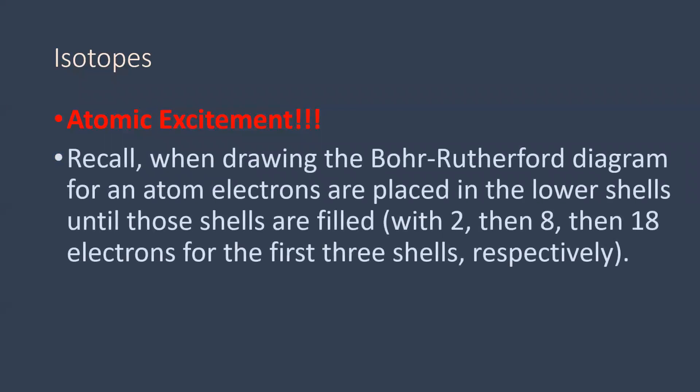Atomic excitement can be part of the reason for this. When we are drawing our Bohr diagram with the electron shells, electrons are placed in the lower shells until those shells get filled up. Your first shell can have two electrons, second shell eight electrons, then 18 in the third shell. This is their normal state or ground state, when they are the most stable. Think of grounded as you're based in reality, down to earth.